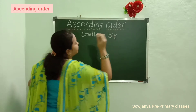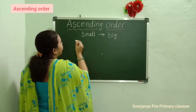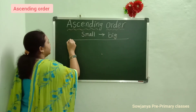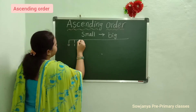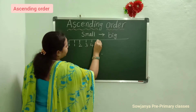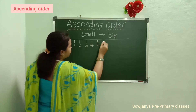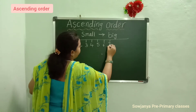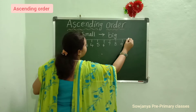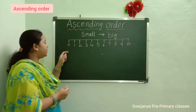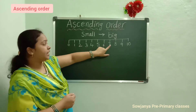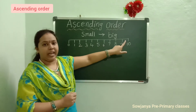Okay children, now I will draw a number line here. 0, 1, 2, 3, 4, 5, 6, 7, 8, 9, 10. Okay children? Now observe once: 0, 1, 2, 3, 4, 5, 6, 7, 8, 9, 10.